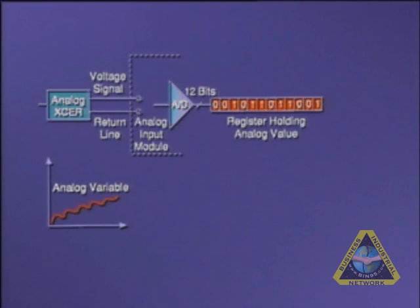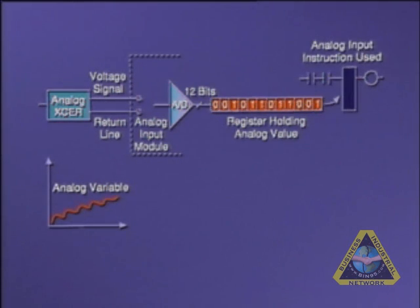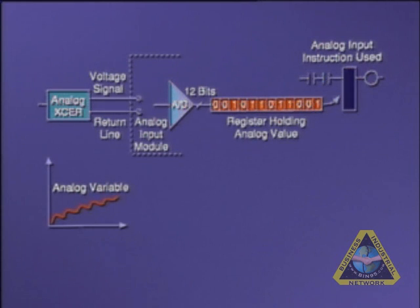This value is placed in a holding register inside the module, which will transfer the value once the appropriate instruction is executed during the program scan evaluation of the ladder control program. The instruction will transfer the numeric analog value into a register as specified by you in the analog input instruction used.